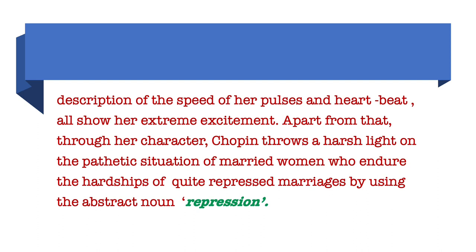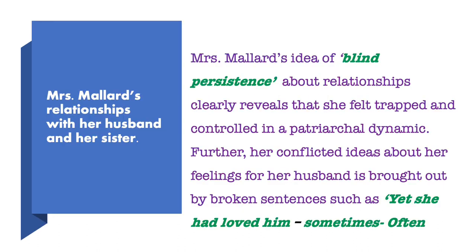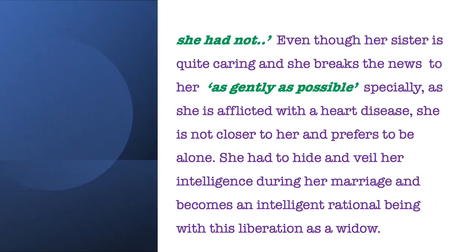Paragraph 3 contains the points for Mrs. Mallard's relationships with her husband and her sister. Mrs. Mallard's idea of blind persistence about relationships clearly reveals that she felt trapped and controlled in a patriarchal dynamic. Her conflicted feelings for her husband are brought out by broken sentences such as 'yet she had loved him sometimes — often she had not.' Even though her sister is quite caring and breaks the news to her as gently as possible, especially given that she is afflicted with a heart disease, she is not close to her and prefers to be alone. She had to hide and veil her intelligence during her marriage and becomes an intelligent, rational being with this liberation as a widow.